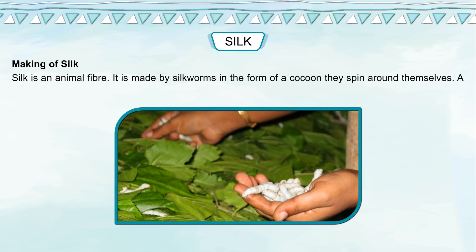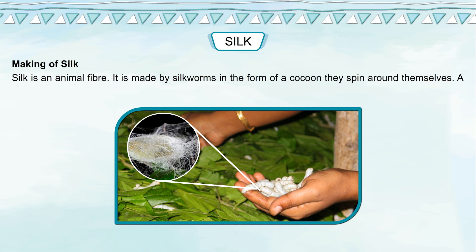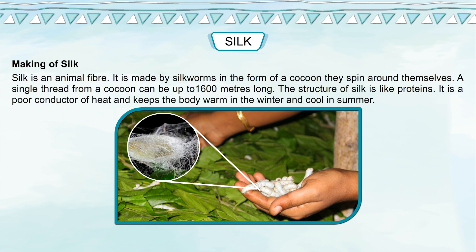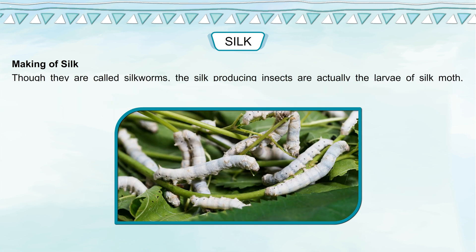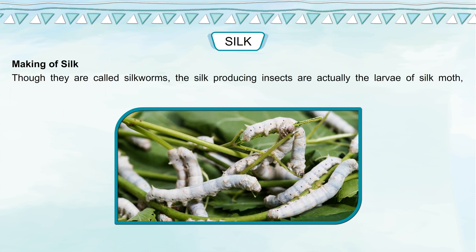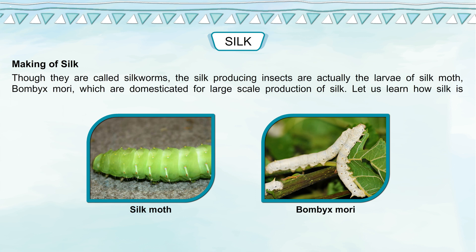Silk is an animal fiber made by silkworms in the form of a cocoon that they spin around themselves. A single thread from a cocoon can be up to 1600 meters long. The structure of silk is like proteins; it is a poor conductor of heat and keeps the body warm in winter and cool in summer. Though they are called silkworms, the silk-producing insects are actually the larvae of the silk moth, Bombyx mori, which are domesticated for large-scale production of silk.